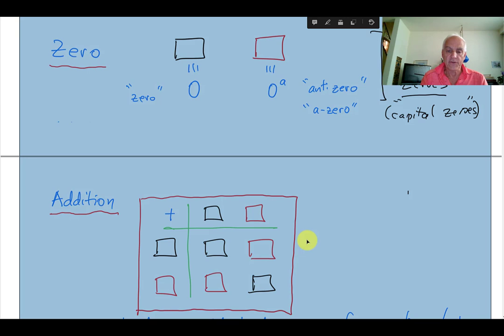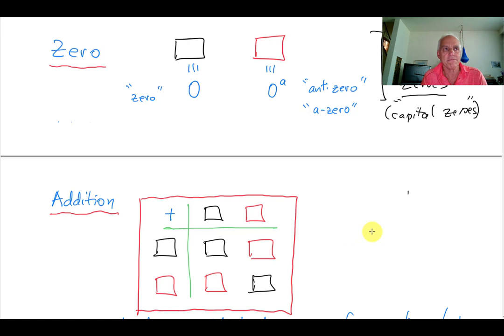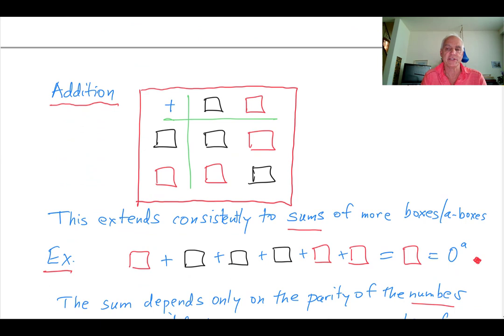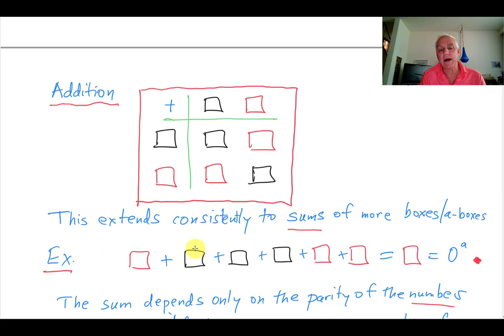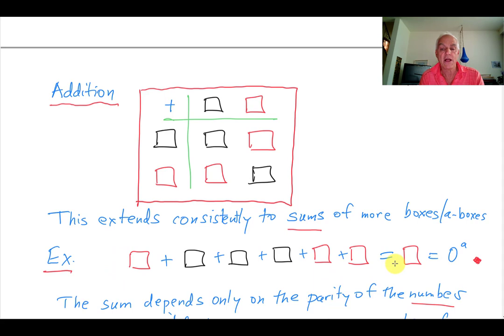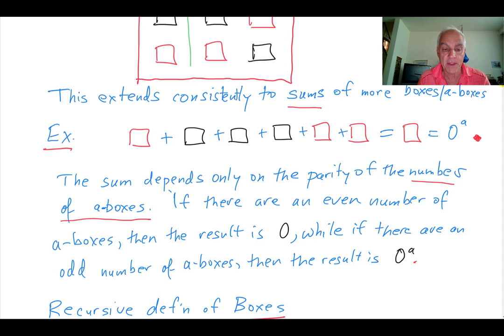This is a pretty fundamental kind of thing, and we justify it because we want the arithmetic we're creating to be somewhat consistent. We can extend this consistently to sums of more boxes or anti-boxes. For example, if we have an anti-zero, a zero, a zero, a zero, an anti-zero, and an anti-zero, what's crucial is the number of anti-zeros — that determines the type of the resulting thing. Since there's an odd number of red ones, the result is another anti-zero. The sum depends only on the parity of the number of anti-boxes.